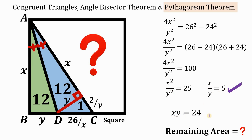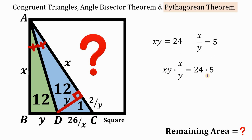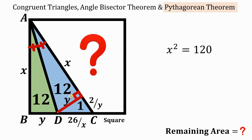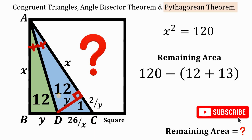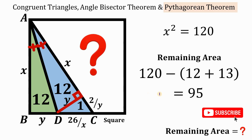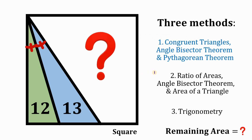Using x/y = 5 and xy = 24, we multiply the two equations: (xy)(x/y) = 24 × 5, giving x² = 120. This x² is the area of our square. The remaining area is the area of the square minus 12 plus 13, which is 120 − 25 = 95 square units. So by the first method, the remaining area is 95 square units.